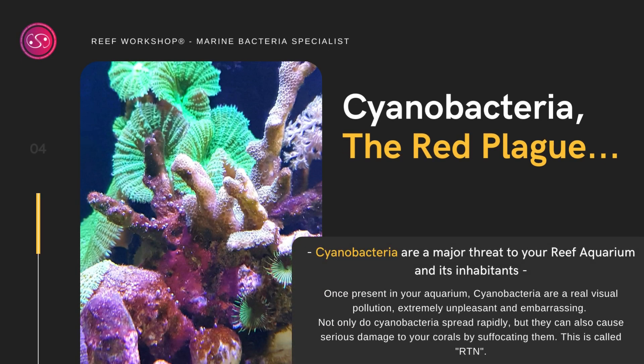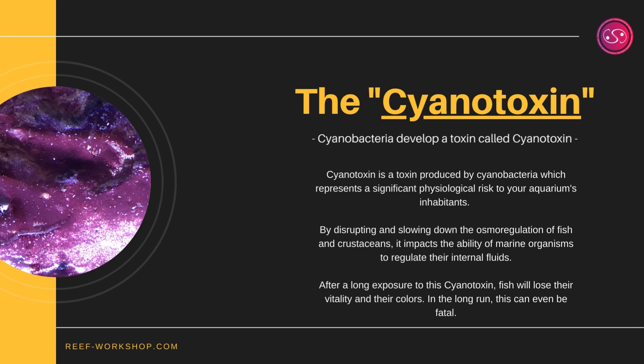Cyanobacteria are also called red plague as they spread extremely fast. They can, of course, have serious consequences on your reef aquarium and its inhabitants. In addition to causing a lot of unpleasant visual pollution, they can cause serious damage to your corals by suffocating them. Once covered with cyanobacteria, corals undergo what is called a rapid and irreparable tissue necrosis. On top of that, the cyanobacteria develop a toxin called cyanotoxin, which represents a major physiological risk for the inhabitants of your aquarium.